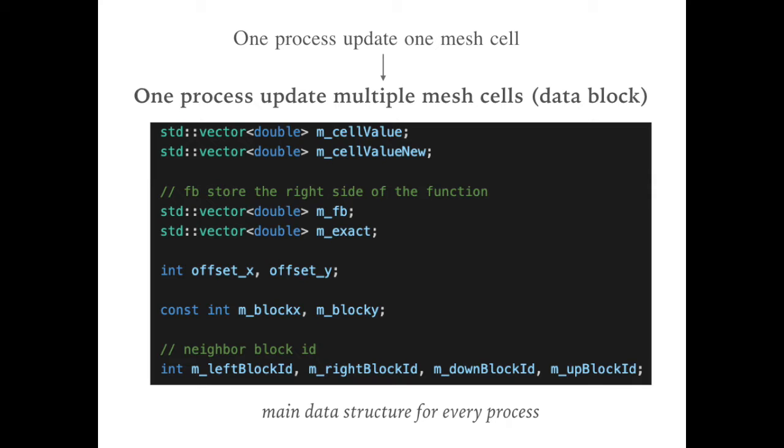Besides, the FB array stores the right side of the equation. The exact values is used for checking the results. And the offset is used to transform the index from the local view to the global view. The block X and Y are the index for every data block. And the neighbor block IDs are also needed to be stored by each process.